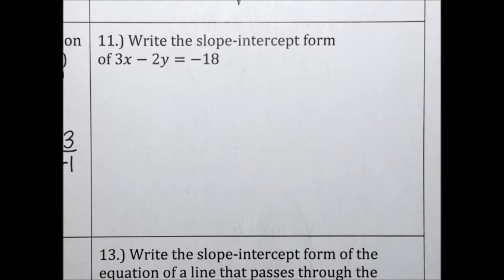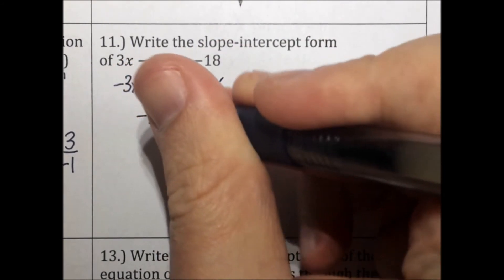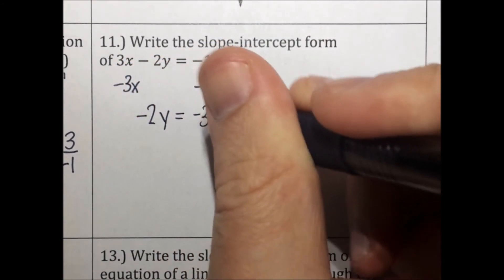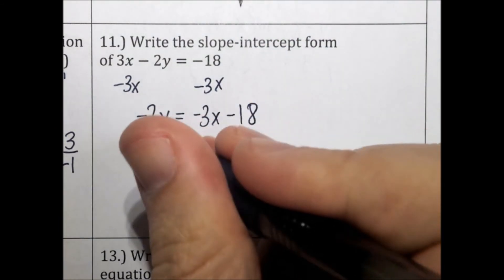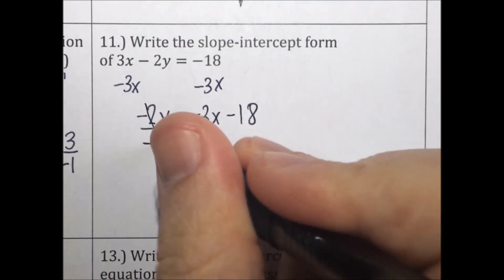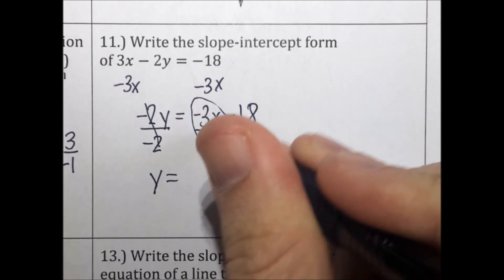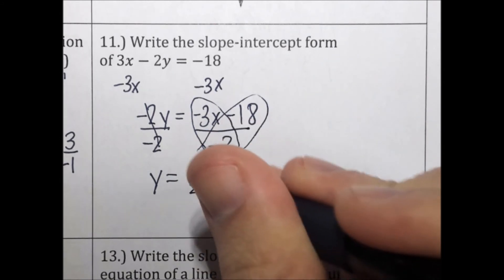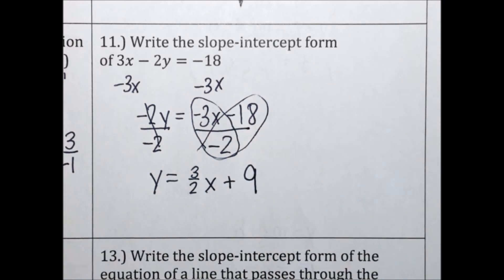Write the slope-intercept form of 3x minus 2y equals negative 18. Slope-intercept form means y needs to be alone. Move 3x: negative 2y equals negative 3x minus 18. Divide everything by negative 2: y equals 3 halves x plus 9.